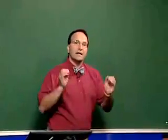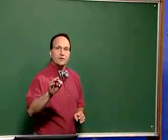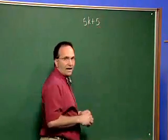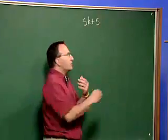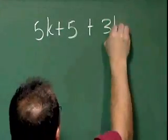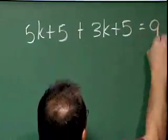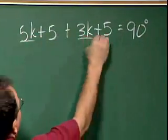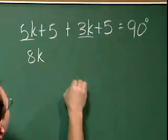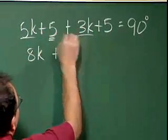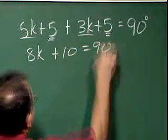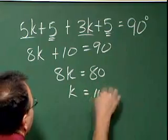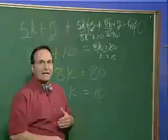So we have to take the two angles and add them together. So the first angle we have is 5k plus 5. The second angle we have is equal to 3k plus 5, and that adds up to 90 degrees. So 5k and 3k gives me 8k, then I have plus 5 and 5 is 10 for 90, so 8k is equal to 80, k is equal to 10.